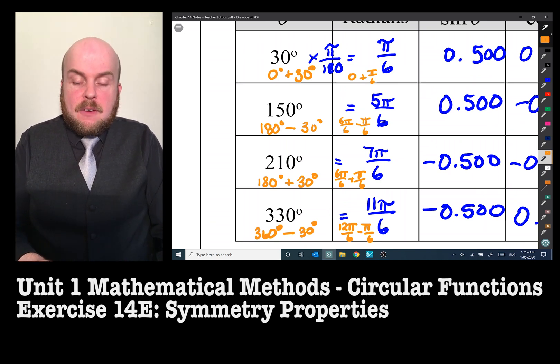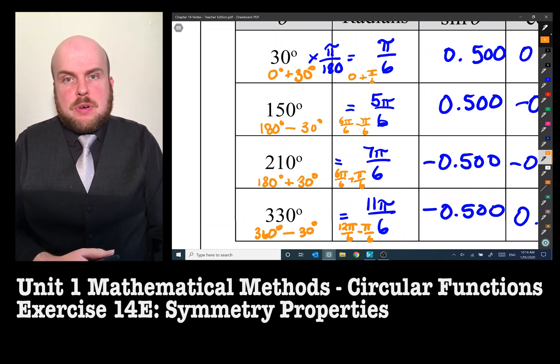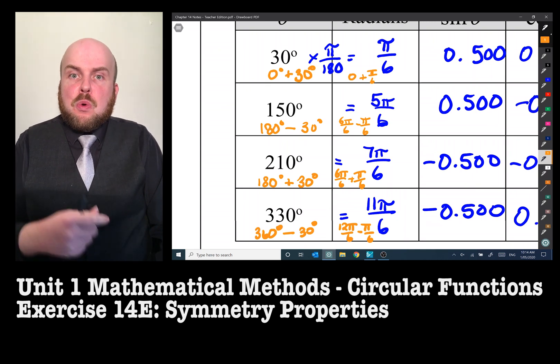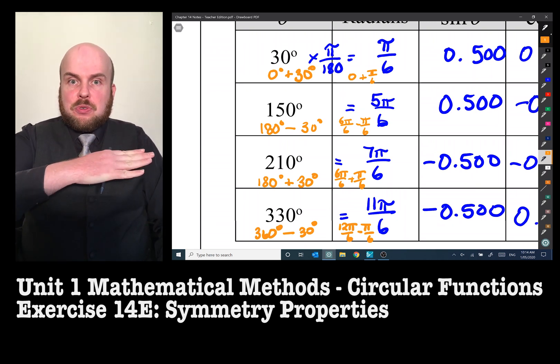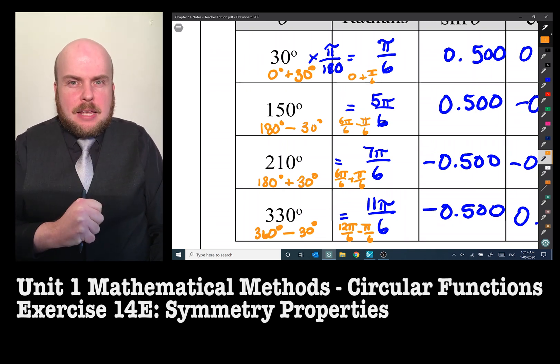So you'll notice the pattern here is all about plussing or minusing the 30 degrees or the π on 6. And then all of the first numbers, the 0, 180, the 360, are all the angles at that horizontal. So therein lies the pattern of how we can solve with symmetry.